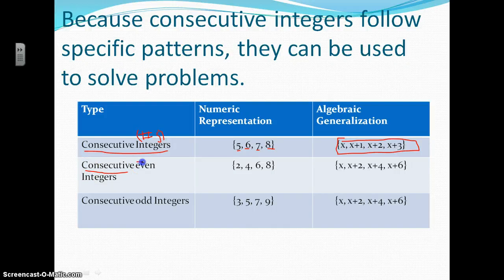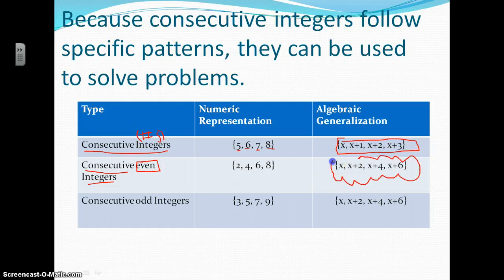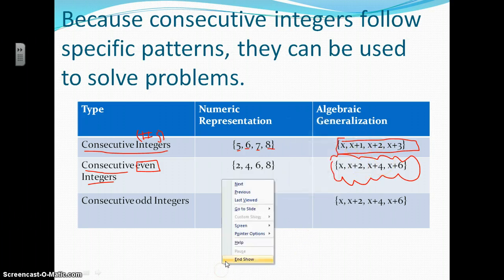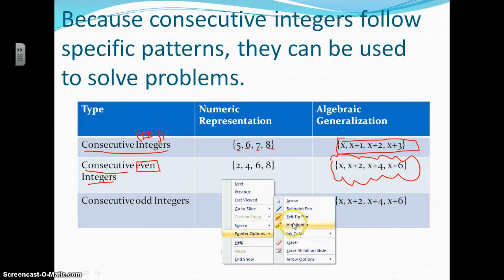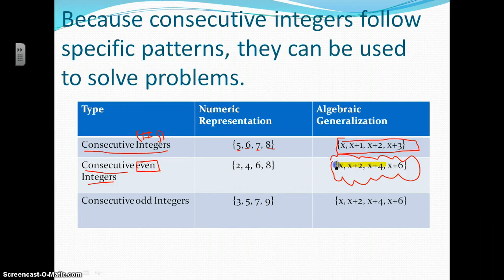Now if it says consecutive even integers — for example, like 2, 4, 6, 8, 10, 12 — then this is the setup that you will use. Notice this setup is different than the other one. The setup for consecutive even integers is: X, X plus 2, X plus 4, X plus 6. So if it has the word 'even,' you're going to use this setup.